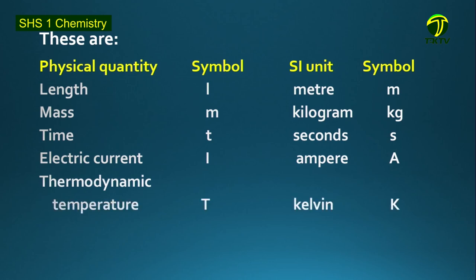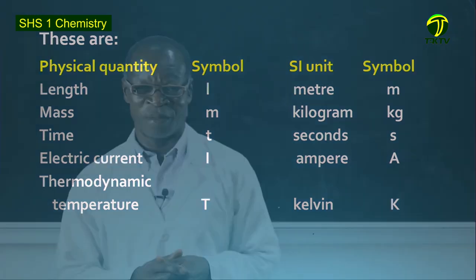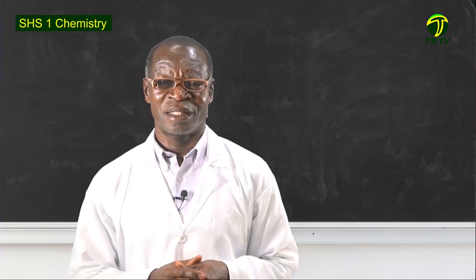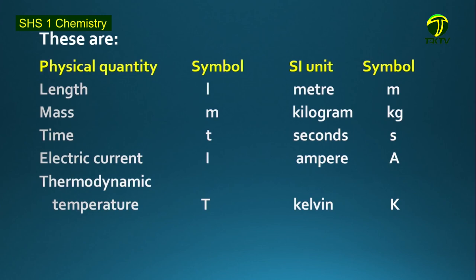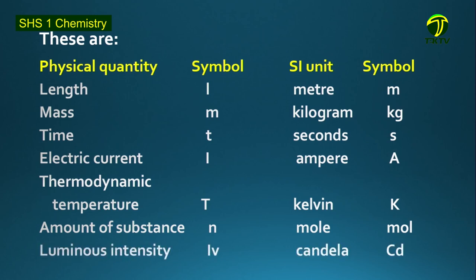Then we have thermodynamic temperature — some books will write absolute temperature. When we go to states of matter, you will know why it is called absolute or thermodynamic, and not simply temperature. The symbol is capital T and the SI unit used is Kelvin, symbol capital K. Then we have amount of substance; the symbol is N and it is measured in mol (M-O-L). Then we have luminous intensity, with symbol Iv, measured in candela with the symbol cd.